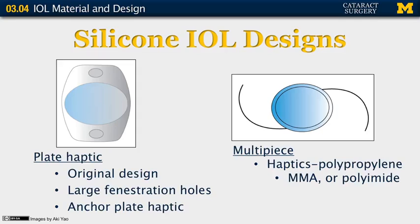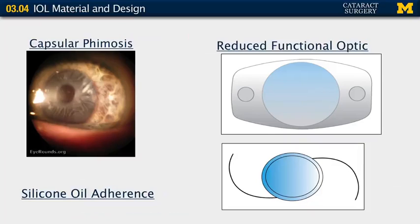There are two basic designs available in silicone lenses. The original was the plate haptic design — this one-piece lens has two large fenestration holes that allow the surgeon to position and rotate the lens in the capsular bag, and they help the anterior and posterior capsule leaflets to adhere through the fenestrations for long-term stabilization. One problem with plate haptic silicone lenses is that they have a tendency to dislocate after YAG laser capsulotomy. The multi-piece silicone lens has haptics made of polypropylene and is placed in the capsular bag. Silicone lenses do tend to have a reduced functional optic and may not be the best choice in patients with large pupils.